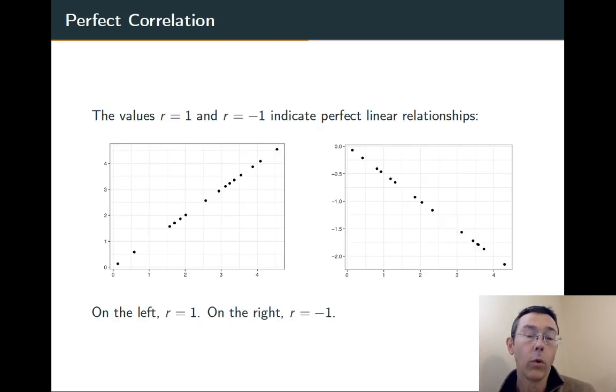Values of R equals 1 and negative 1 give you perfect linear relationships. So, that means all the data lies exactly on a line. Be careful you don't confuse R with the slope. The sign of R will tell you whether the slope is positive or negative, but R is not specifically telling you the slope.